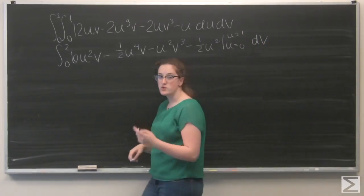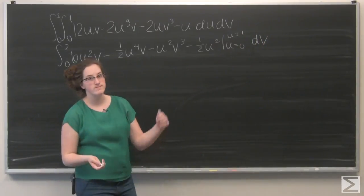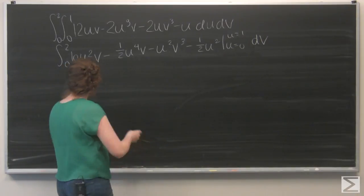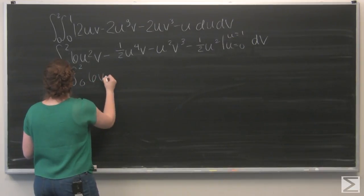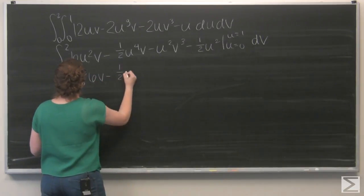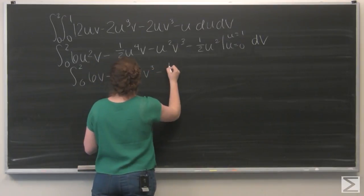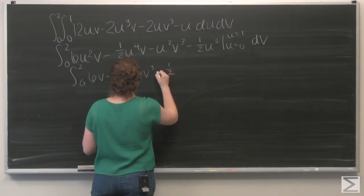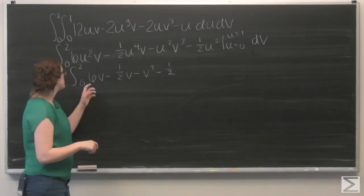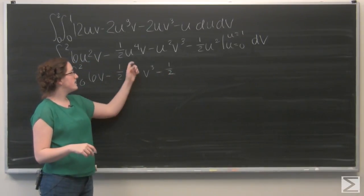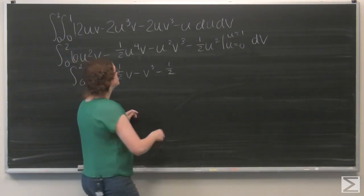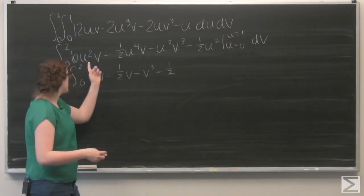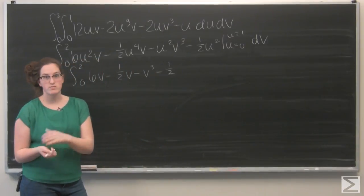And I want to evaluate that from u equals 0 to u equals 1. Let's go ahead and plug in a 1 everywhere I see a u. So, I've got 6v minus 1 half v minus v cubed minus 1 half. And now, let's plug in u equals 0. So, each term has a factor of u. So, when you plug in 0, I'm just going to get 0.